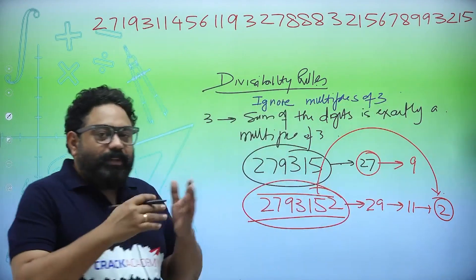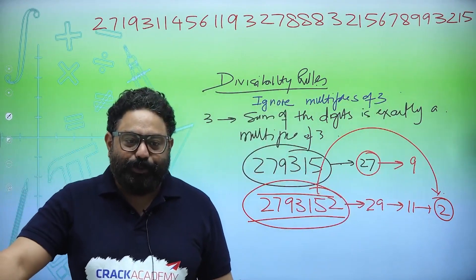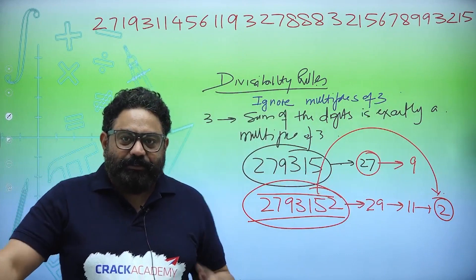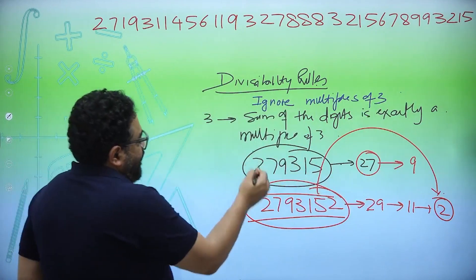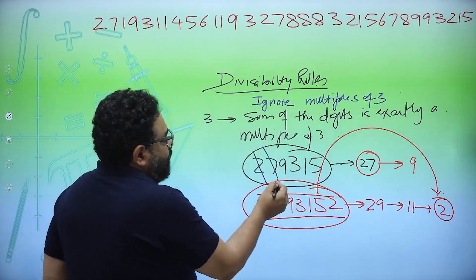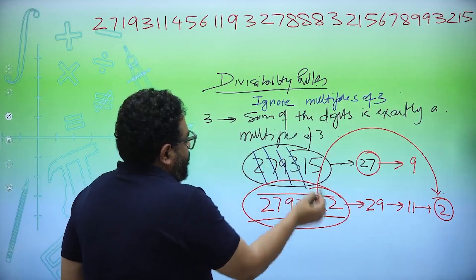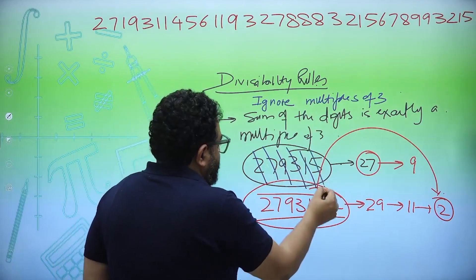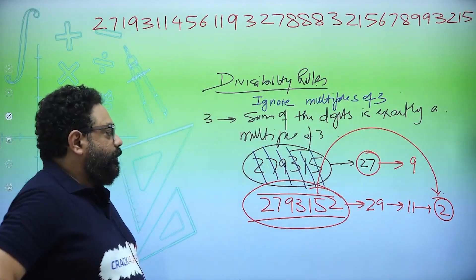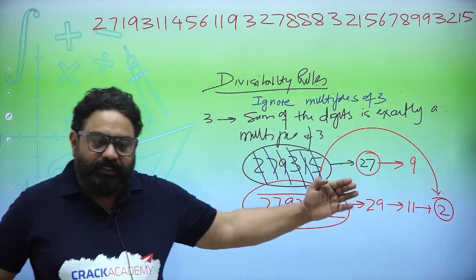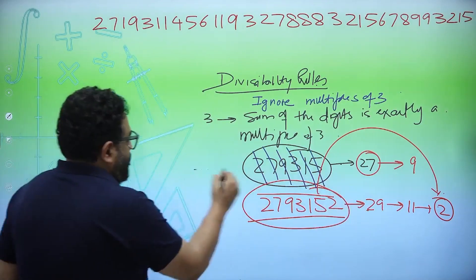The new rule: when checking divisibility by 3, ignore any multiples of 3. For example, with 279315 — 2+7=9, ignore (multiple of 3); 9, ignore; 3, ignore; 1+5=6, ignore. The whole number is ignored, so it is exactly divisible by 3.